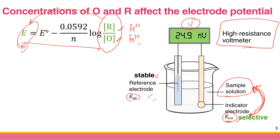The properties of the reference electrode are that it needs to be stable. The indicator electrode has to be selective, because there may be more than one ion or chemical species in the solution. For example, if you want to measure chloride, your indicator electrode has to be sensitive to only chloride. If you want to measure iron(III)/iron(II), your indicator electrode has to be selective to only those species. Most of this chapter will discuss examples of indicator electrodes.